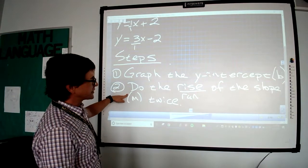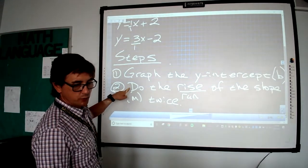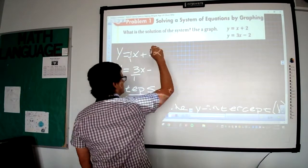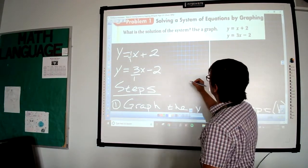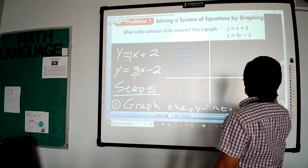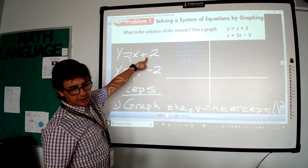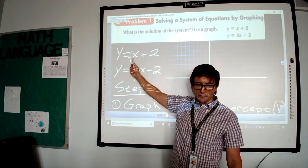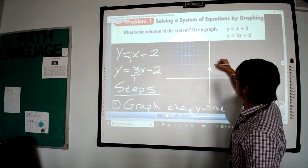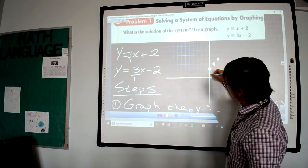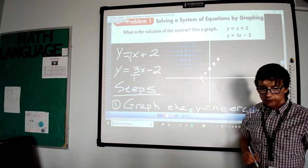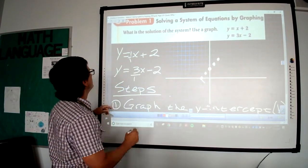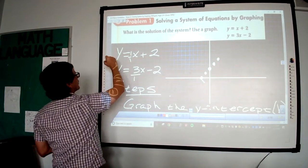So we're going to graph the y-intercept first, then we're going to do the rise over run of the slope twice, two times. I'm going to draw a coordinate plane up here. So we start at positive two on the y-axis and from there we're going to go up one, right one. Up is a positive direction, right is a positive direction. You can also go down one, left one.